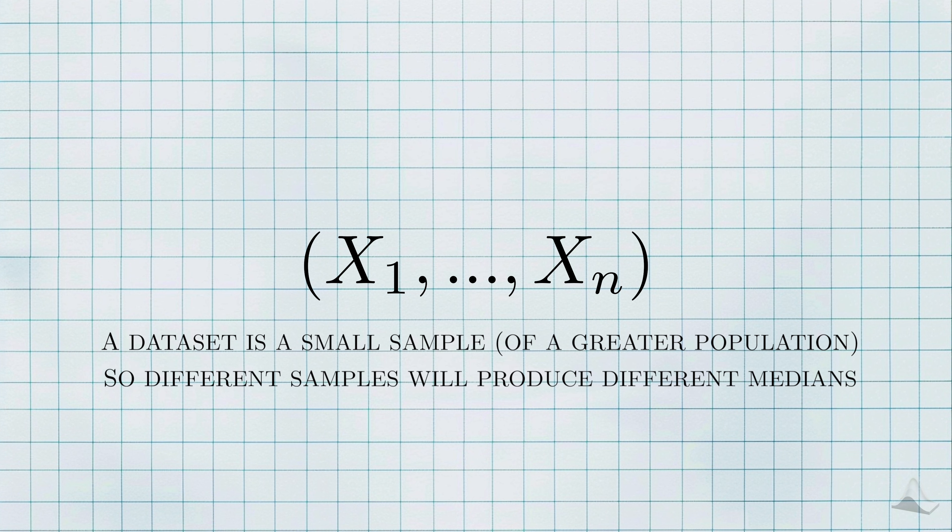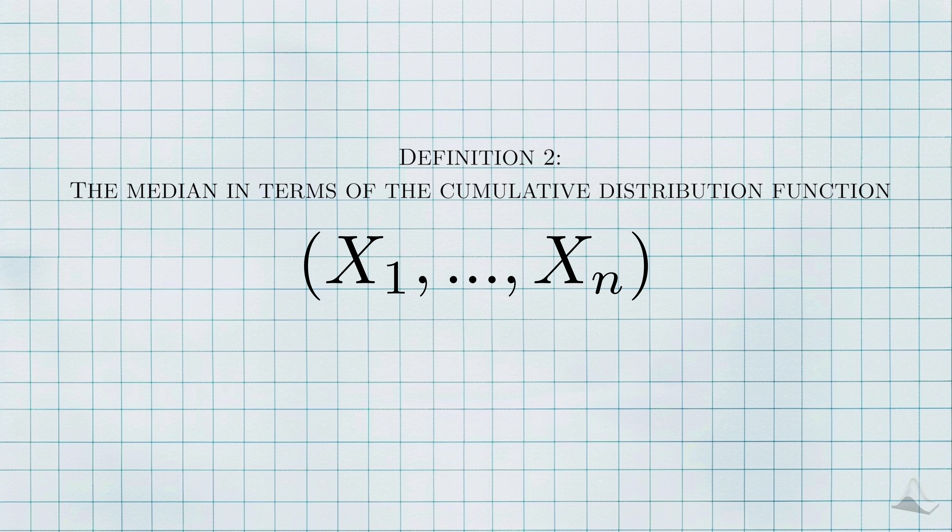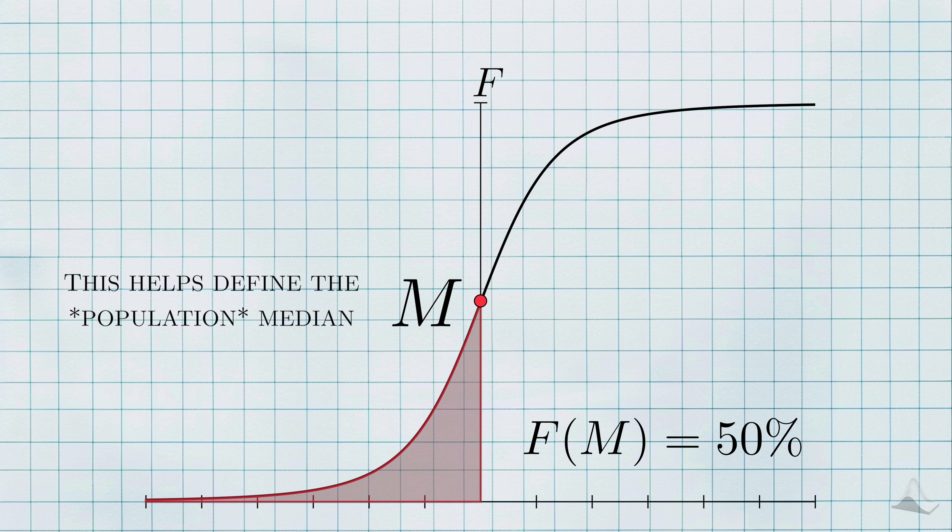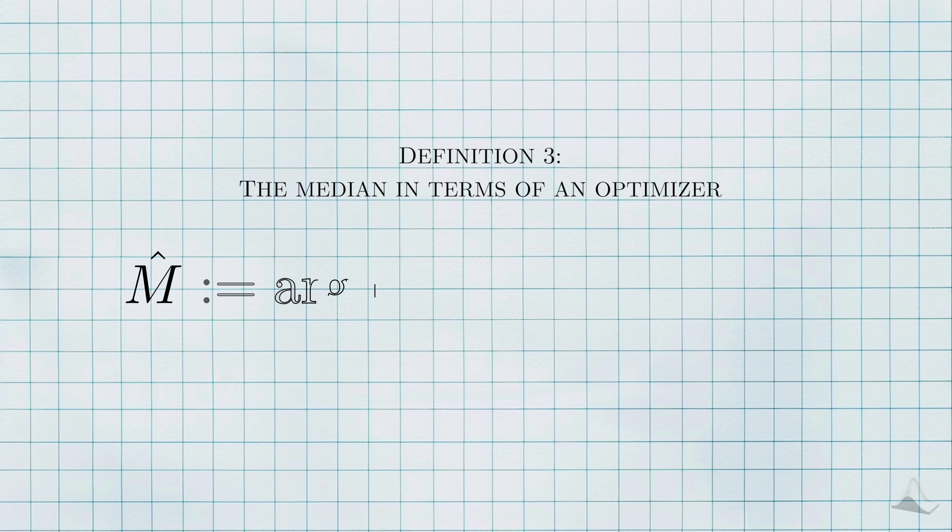Things get harder when your set of numbers is a dataset. A dataset is just a sample. Different samples will produce different medians. In the statistical context, you can think of the median as a special location in the population distribution. More specifically, it's the smallest value such that when you evaluate it for the population CDF, the resulting cumulative probability will be equal to 50%. This definition tells us about the population median, but not about a median estimator that we need to derive from data.